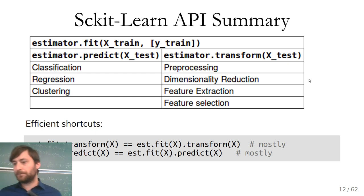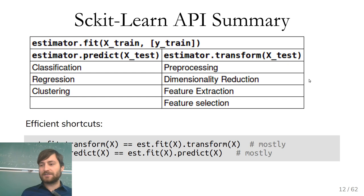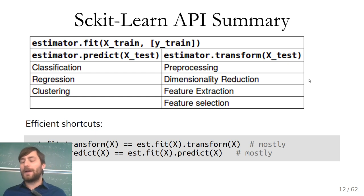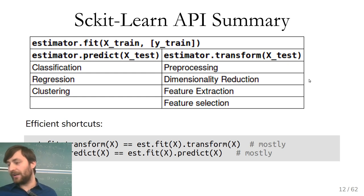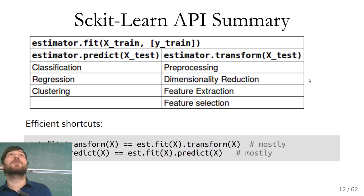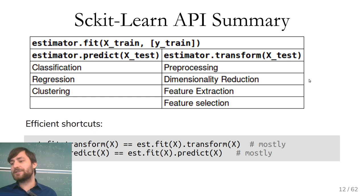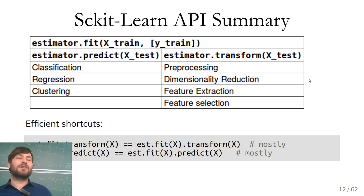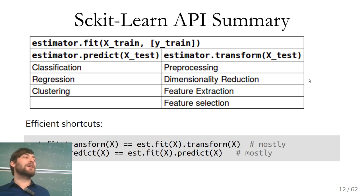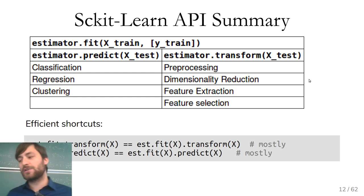There are two shortcuts I often use: fit_transform and fit_predict. They're mostly computational shortcuts. For example, when computing principal components, fit already does the work of transform, so doing transform again is wasted computation. It's also shorter to write.